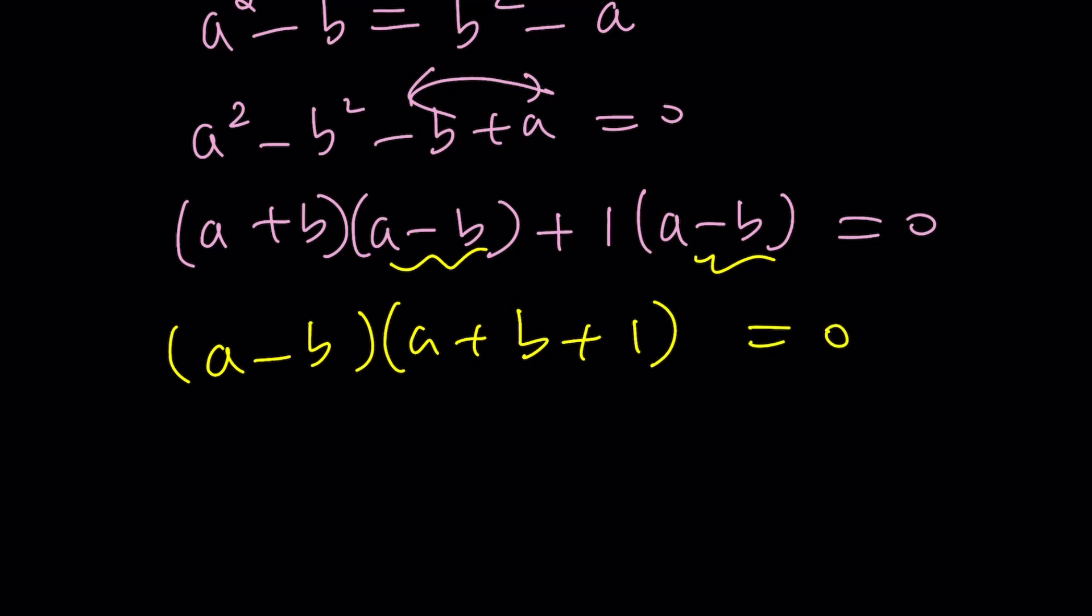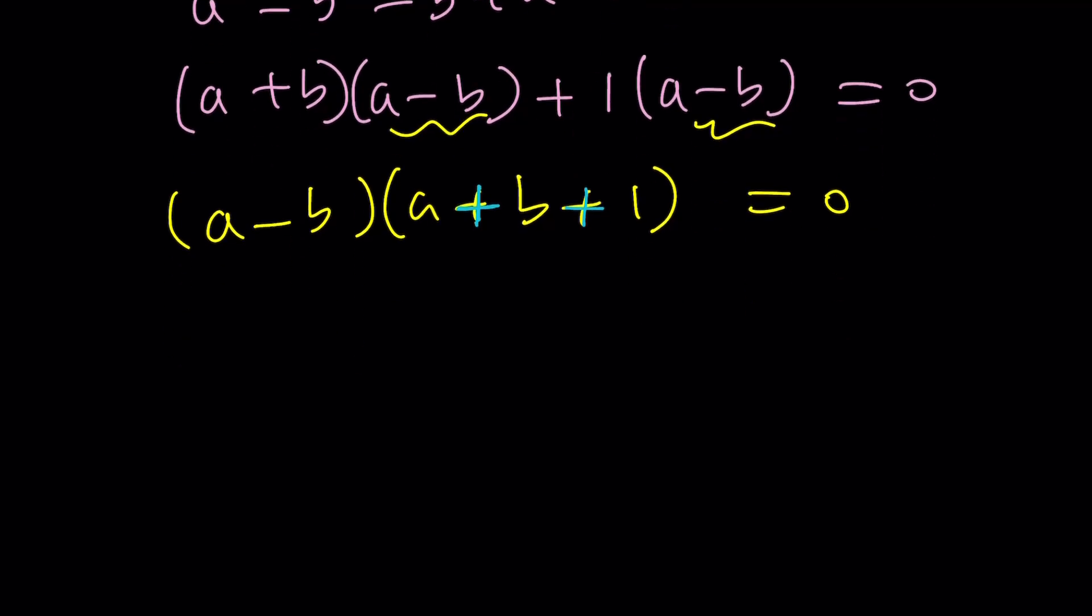And notice that I can write this a squared minus b squared as a plus b times a minus b from difference of two squares. And then this one as one times a minus b because it's already a minus b. You see? Switch them around. You'll see it. And now a minus b is a common factor. Pull it out. And you're going to have a plus b plus one equals zero. You see how neat that is? Of course, the numbers are equal. So what can I do? It's a contrived problem. But I know some people don't like contrived problems. They're like, they're not real.